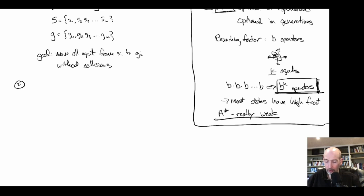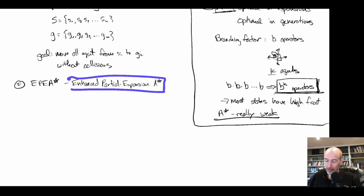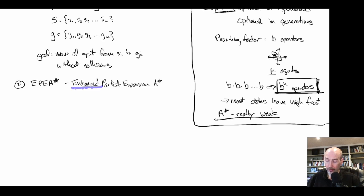The second approach is called EPEA* — Enhanced Partial Expansion A*. There is a base algorithm called Partial Expansion A*, originally designed for domains with large branching factors where memory was running out. A later version was developed in the context of multi-agent pathfinding as an enhanced version that does some smarter things than the original.